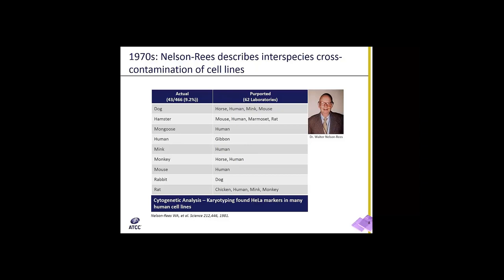The findings were, of course, not well received by the research culture community. The concern was that contamination by HeLa was widespread in the tissue culture community and also at NIH. They asked Dr. Nelson Rees from the Naval Biological Laboratory to do a survey of the cell lines in use. He looked at 466 lines and found that 43, or 9.2%, had been misidentified. So now we were seeing widespread not only interspecies contamination but also intraspecies contamination.